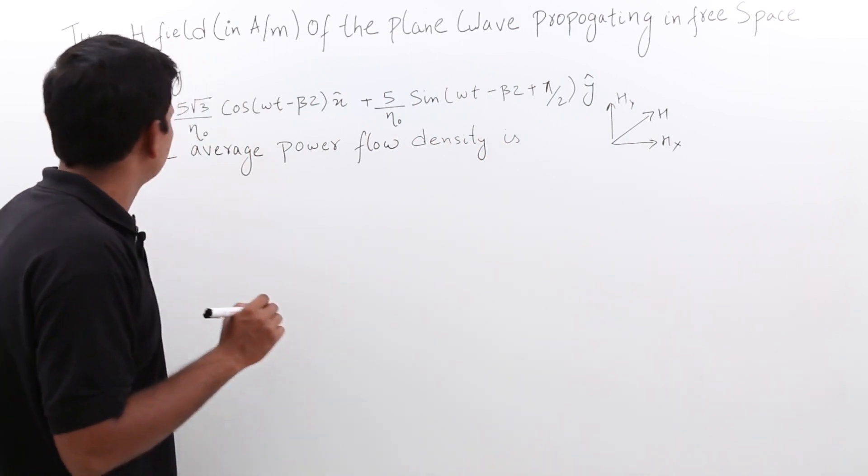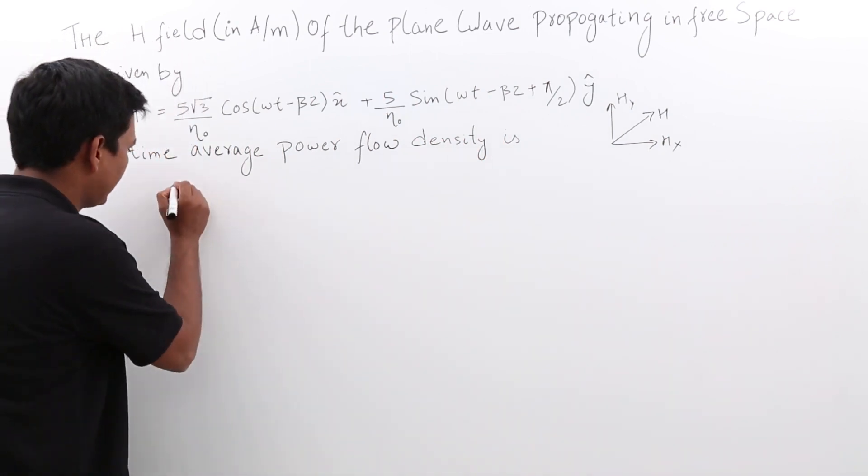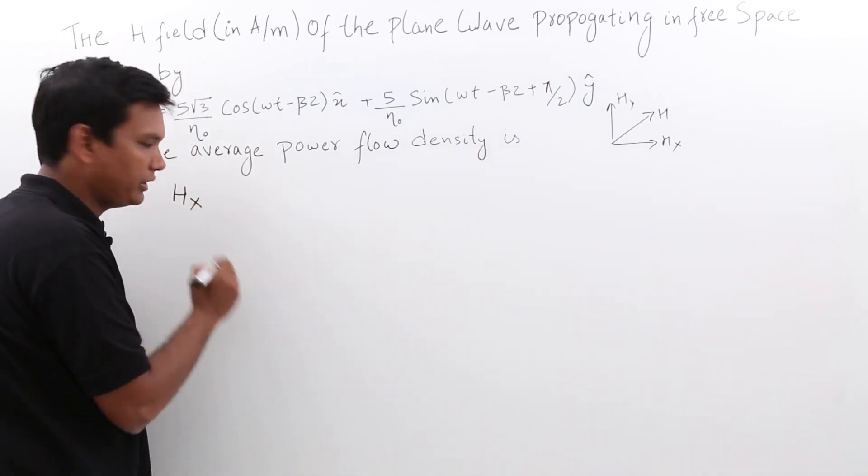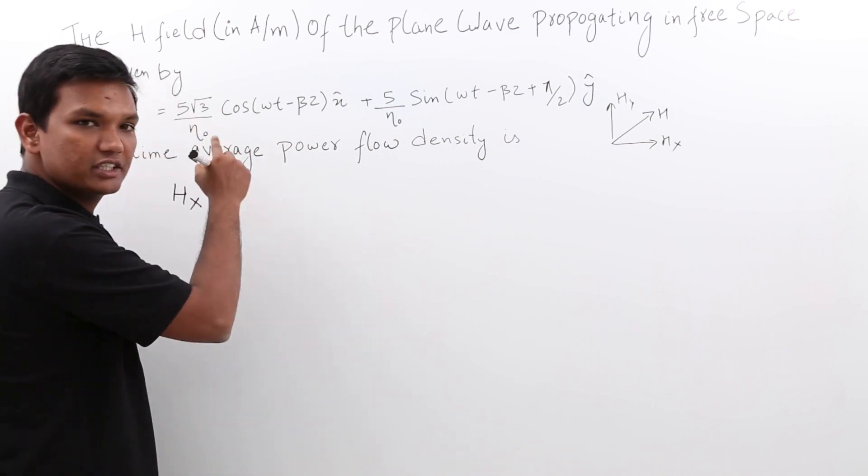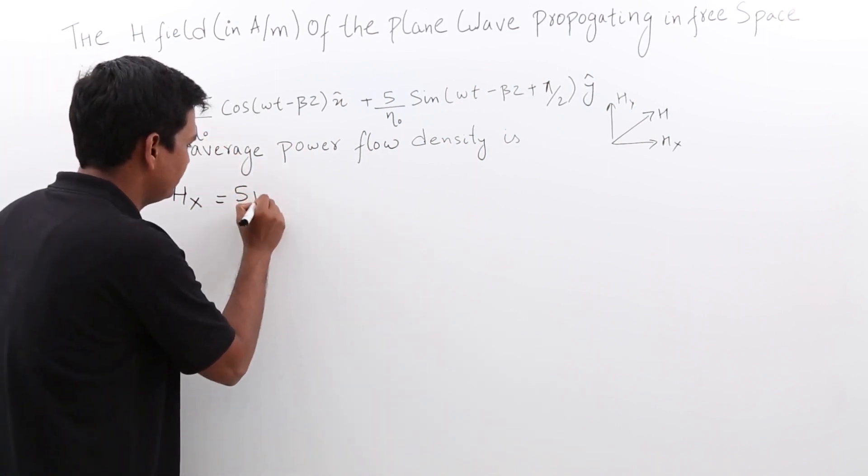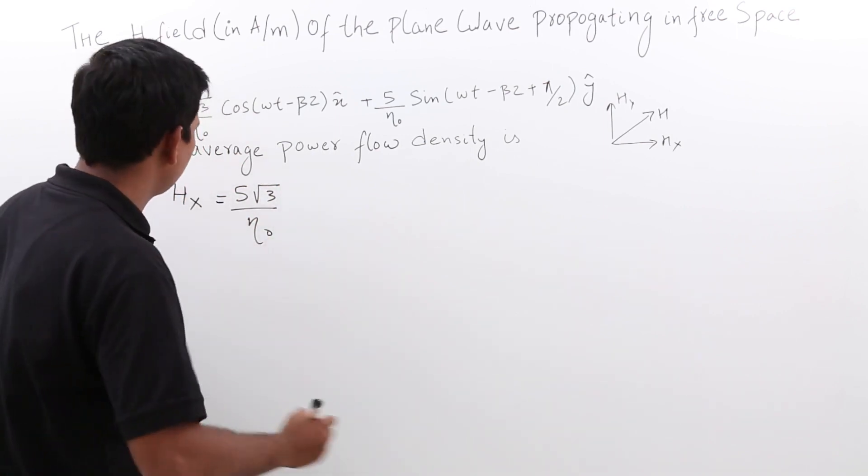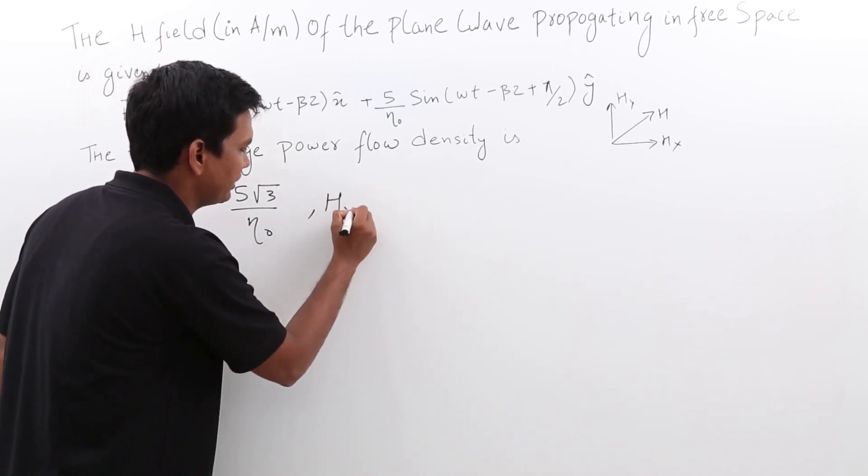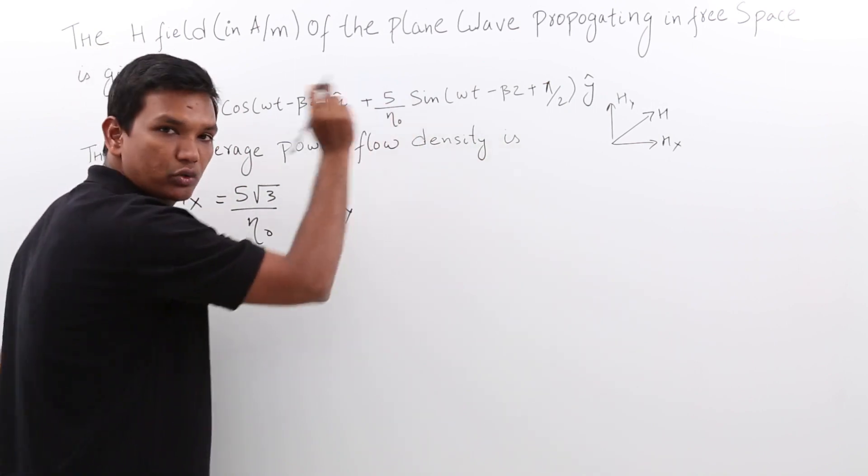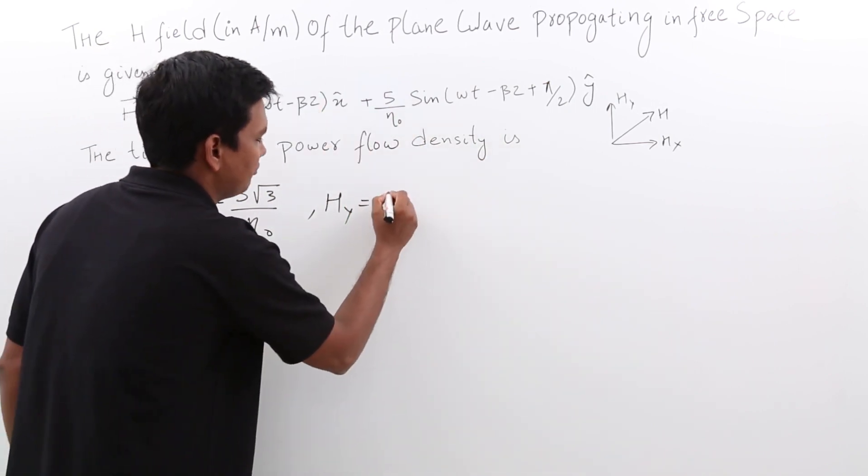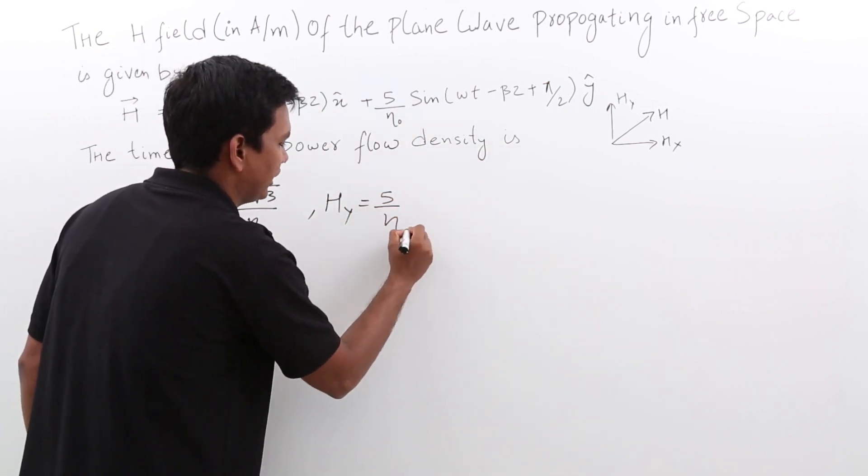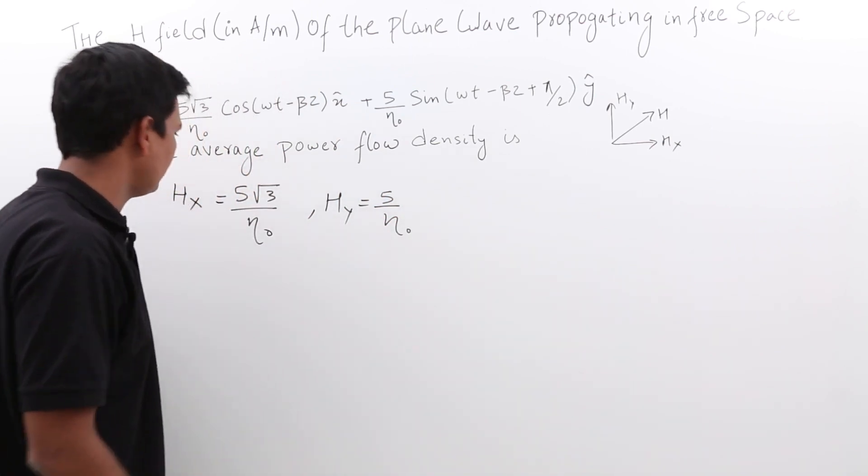So what I am going to do is write the H x component. What is the magnitude of H x component? It is 5 root 3 by n naught. What is the H y component? H y component is 5 by n naught.